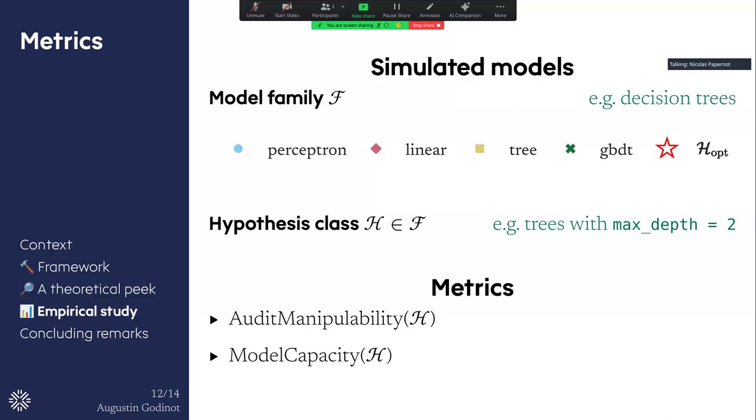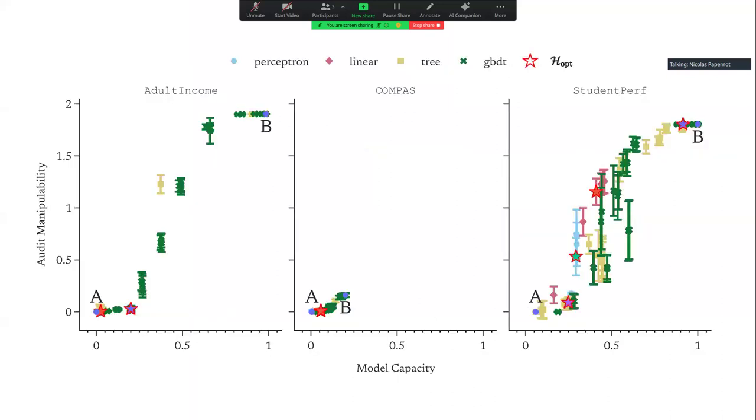And we looked at two metrics, the audit manipulability, so the diameter I talked about, which is a worst-case bound on how much the fairness metric will change after the audit, and the model capacity, which is an estimation of the hard-dimensional complexity of the class. And to have some intuition on this, it's just how well a hypothesis class can fit random noise. And this gives us an idea of how powerful this hypothesis class is. And what we observed is that, as in theory, as the intuition we had with the theory, the audit manipulability, so you can see on the y-axis, is highly correlated with the model capacity that you can see on the x-axis.